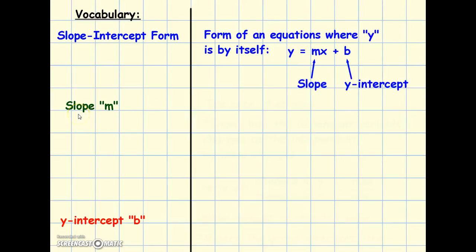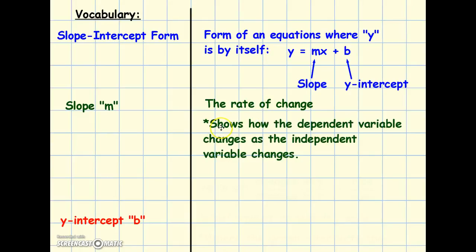Our slope — another vocab word — is referred to as m. It's always the m. The definition of slope is the rate of change: how something changes, it shows that change. It also shows on the graph and in tables how the dependent variable, which is always your y variable, changes as the independent variable changes — and that's your x.